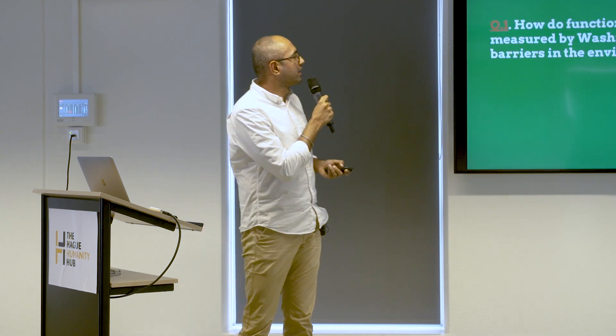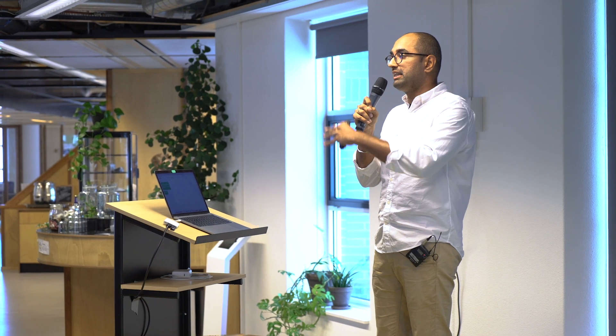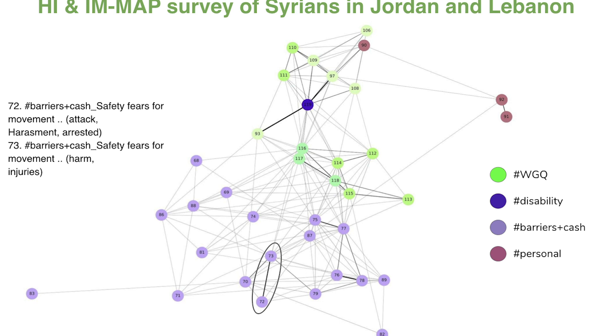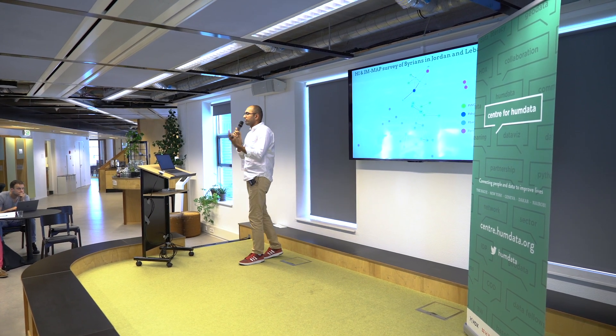So, how do functional difficulties relate to barriers in the environment? I looked at correlation analysis as a technique and mutual information as a measure. Mutual information is a way to measure statistical dependence between variables. If two variables are statistically independent, mutual information is zero. If they start getting more and more dependent, mutual information rises. Looking at a subset of the data, represented as a graph — each circle is a question asked as part of the survey, and each link exists if there is some mutual information between those questions — I'm showing questions related to assistance on cash, and questions in green related to the Washington Group questions on functional difficulties.